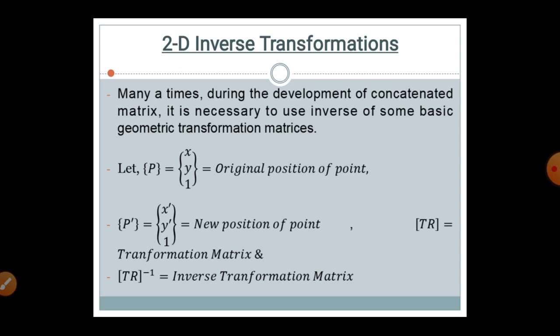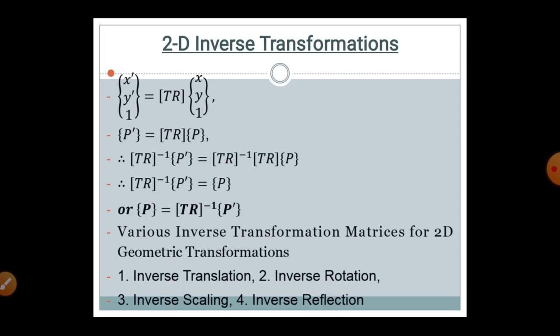Let us assume that the function P equals to (X, Y, 1) in homogeneous coordinate system, representing the original position of a point — that is, the initial or fixed point. And the function P' equals to (X', Y', 1), which is the new position of the point.